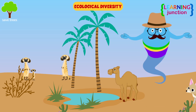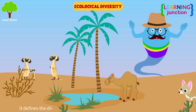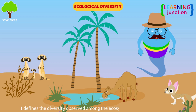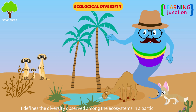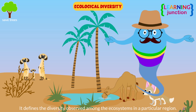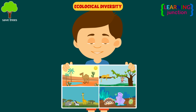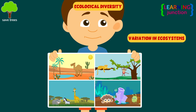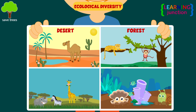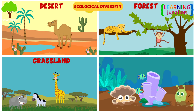Ecological diversity defines the diversity observed among the ecosystems in a particular region. An example of ecological diversity would be the variation in ecosystems such as deserts, forests, grasslands, and oceans.